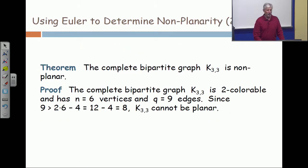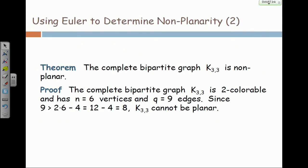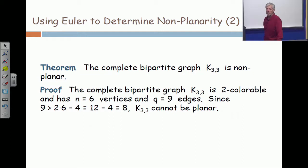Now, what's the application? The application is to the complete bipartite graph K33. If you look at K33, it's obviously two colorable, red on one side, blue on the other. The complete bipartite graph is two colorable. It has six vertices, three on each side, but it has nine edges, nine, three times three. But it can't be planar because nine is bigger than 2N minus four when N is six. Two times six is 12, 12 minus four is eight, nine is bigger than eight. So the complete bipartite graph K33 is non-planar.